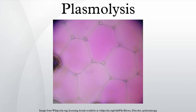Plasmolysis: If a plant cell is placed in a hypertonic solution, the plant cell loses water and hence turgor pressure by plasmolysis. Pressure decreases to the point where the protoplasm of the cell peels away from the cell wall, leaving gaps between the cell wall and the membrane and making the plant cell flaccid.